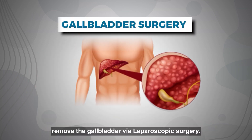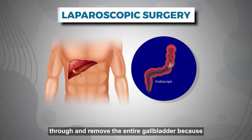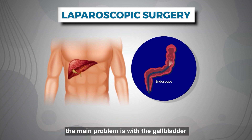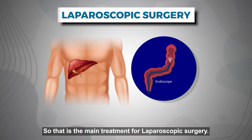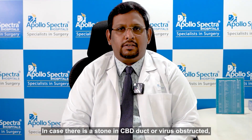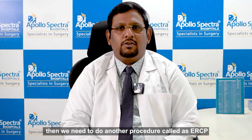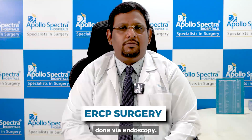The surgery for gallstones is gallbladder surgery, where we remove the gallbladder via laparoscopic surgery. Through a small incision we go in and remove the entire gallbladder, because the main problem is with the gallbladder, so we remove the stones along with the gallbladder. In cases where there is a stone in the CBD duct or the bile duct is obstructed, we may need to do another procedure called ERCP, which is done endoscopically.